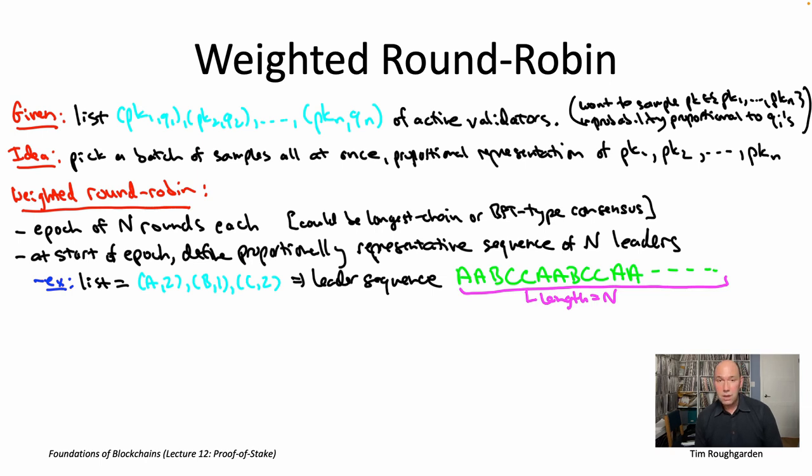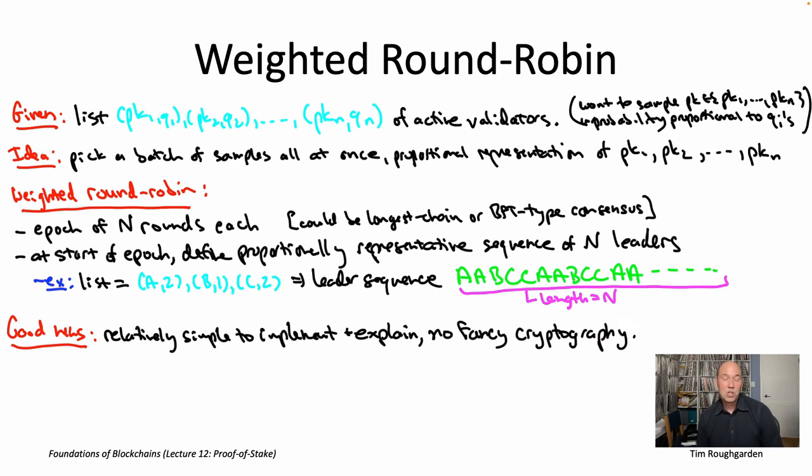So let's talk about the pros and cons of weighted round robin. The main piece of good news is that it is simple. It's going to be relatively simple to implement correctly and debug. You're not going to need to understand or use any fancy cryptography. And it's very easy to explain to everybody exactly what the solution is.